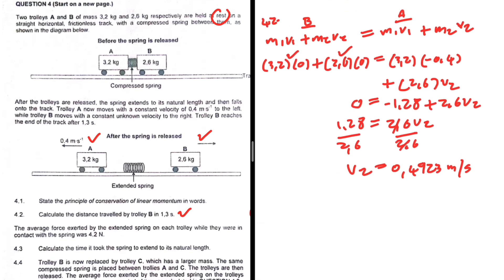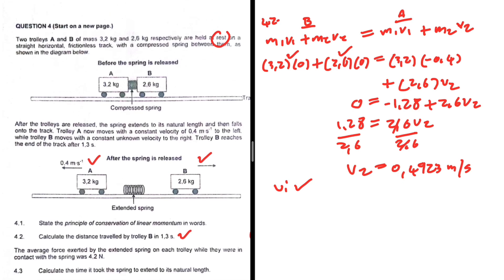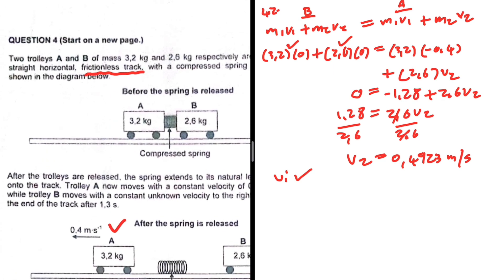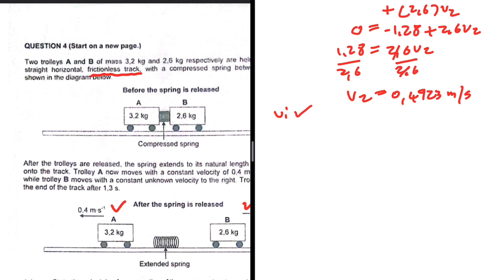That this is the final velocity of trolley B after the spring is extended. But we are interested in the distance. Let's take a look. We have its initial velocity when it starts traveling. We don't have its final velocity because they're not necessarily coming to rest after they've traveled. But our track is frictionless—it's frictionless.